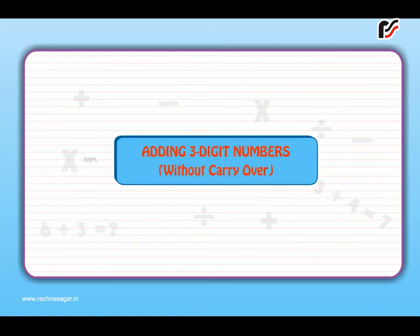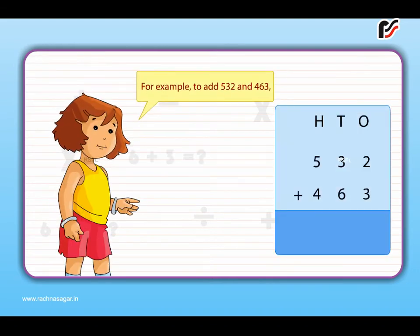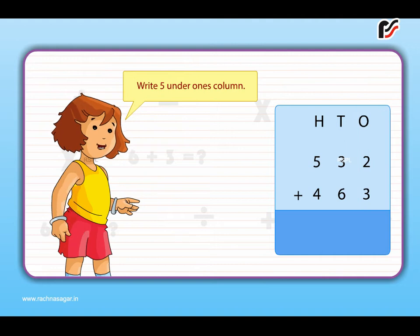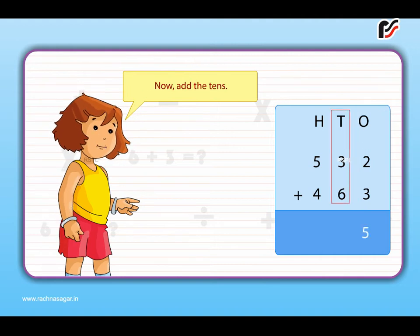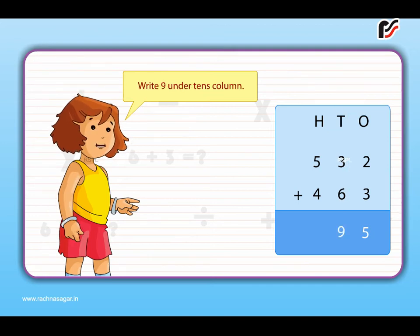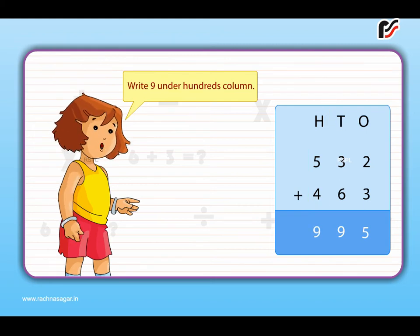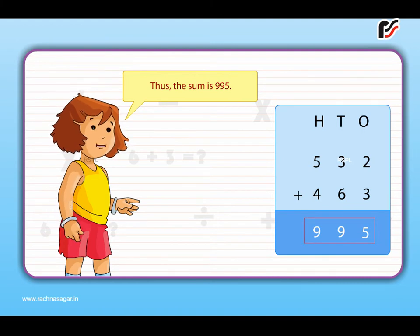Adding 3-digit numbers without carryover. For example, to add 532 and 463, first add the ones: 2 plus 3 is equal to 5 ones. Write 5 under the ones column. Next add the tens: 3 plus 6 is equal to 9 tens. Write 9 under the tens column. Then add the hundreds: 5 plus 4 is equal to 9 hundreds. Write 9 under the hundreds column. Thus, the sum is 995.